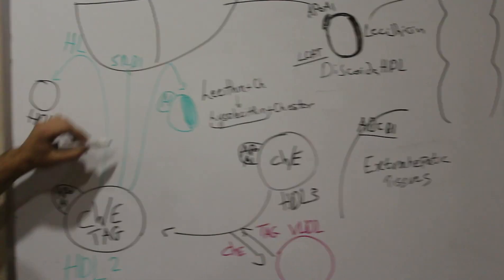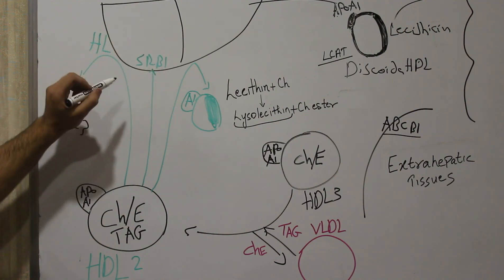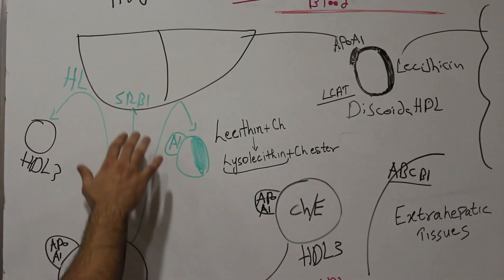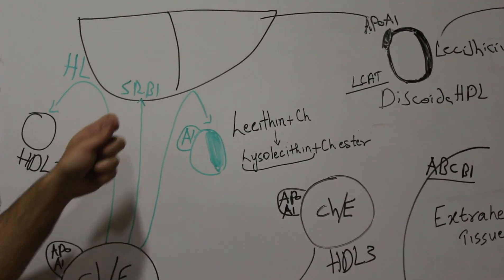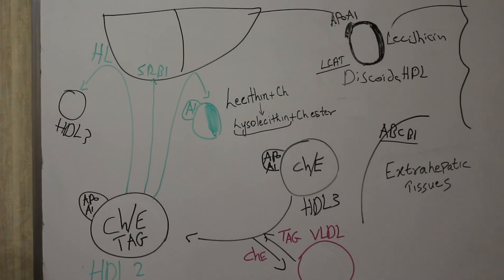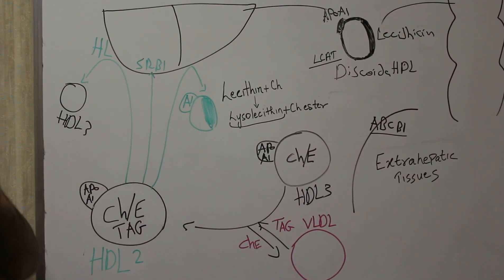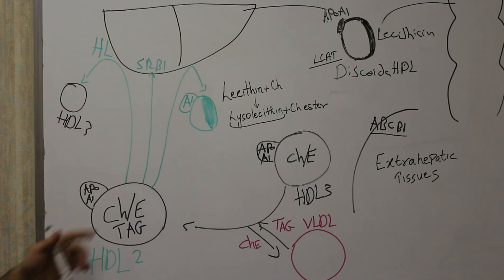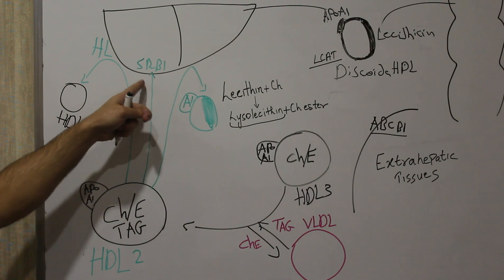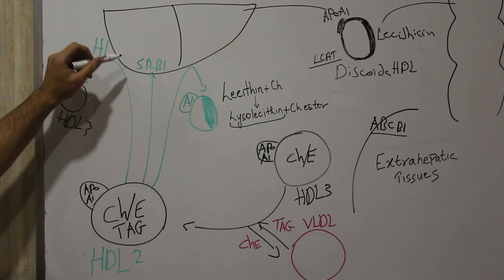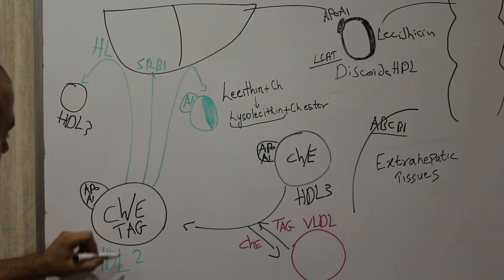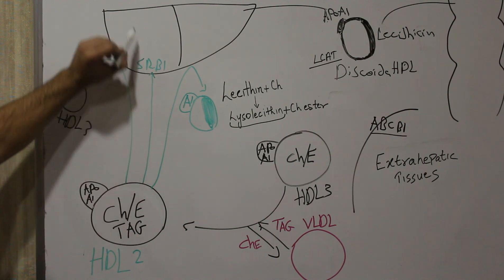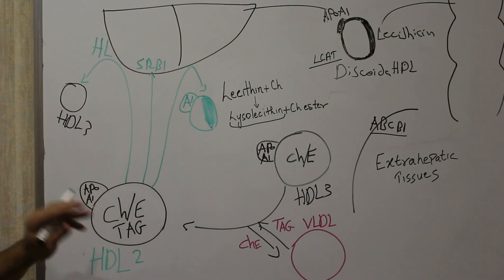The second fate is that HDL2 may undergo endocytosis via a receptor called scavenger receptor B1. As mentioned in the first lecture on chylomicron, some receptors recognize only specific lipoproteins. Scavenger receptor B1 recognizes only HDL lipoproteins and is present on the liver and other tissues.